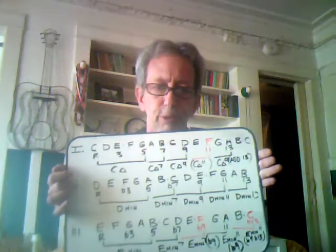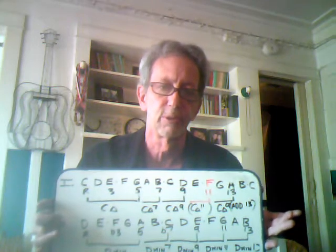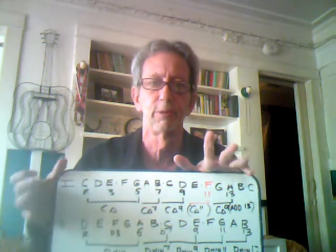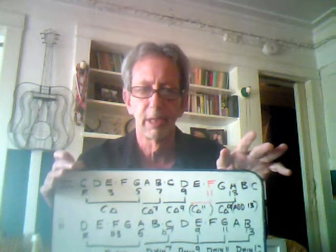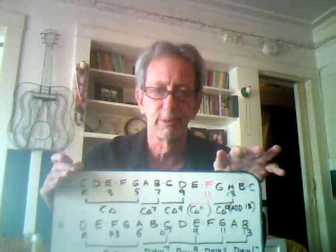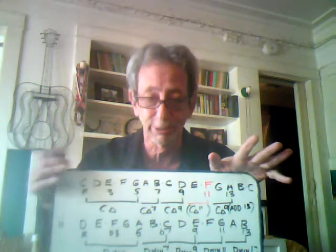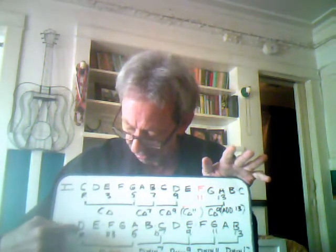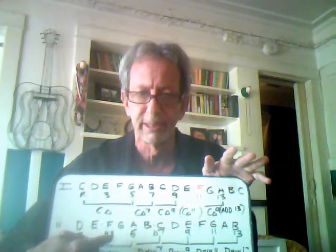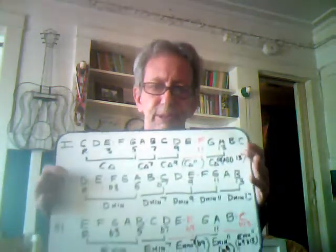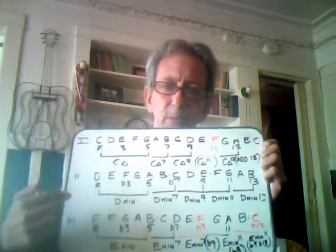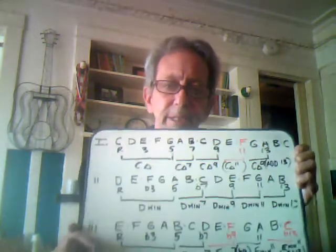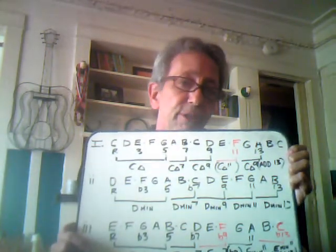Now if you notice, when we go to the second chord of the key of C — the two chord, which is the Dorian step — here we have a D minor chord. We're going to run into a problem in a second, but it looks like there's no problem. There's no red here — you don't see the minor ninth problem coming up. D is the root, F is the flat three, A is the five. Then we extend: when we extend it to the seven, it's called D minor seven. When we extend up to the ninth, it's called D minor nine. When we extend up to the eleven, it's called D minor eleven — and in the minor chord, the eleventh isn't a problem because it doesn't create a minor ninth interval.